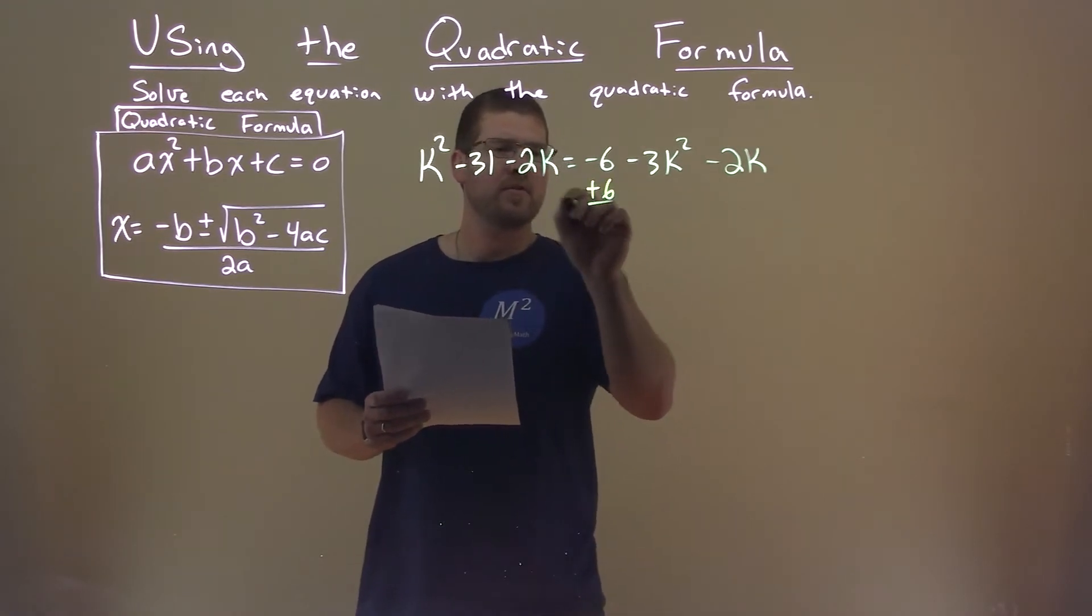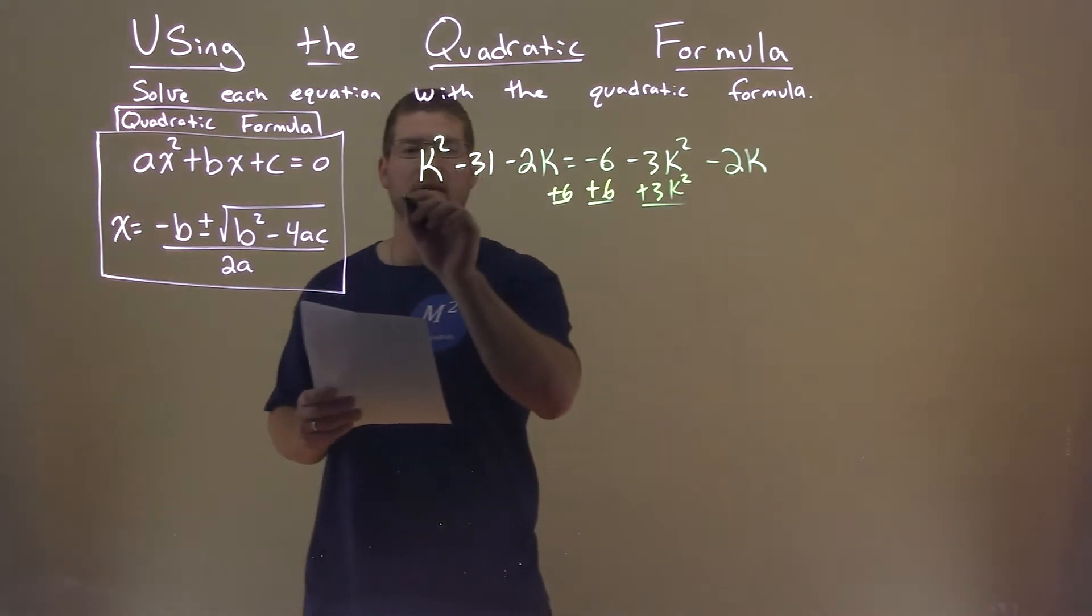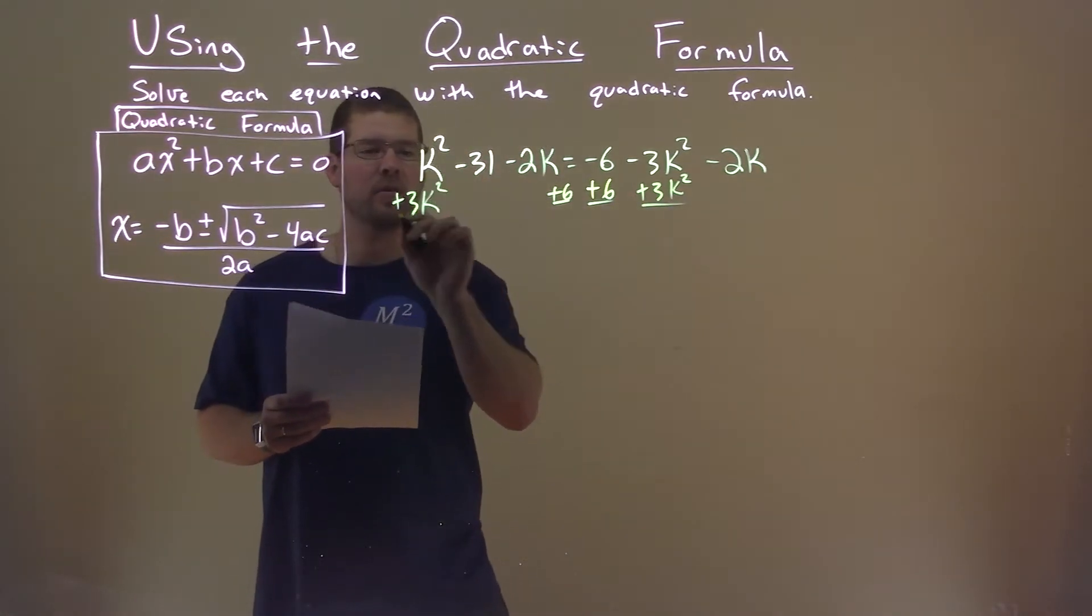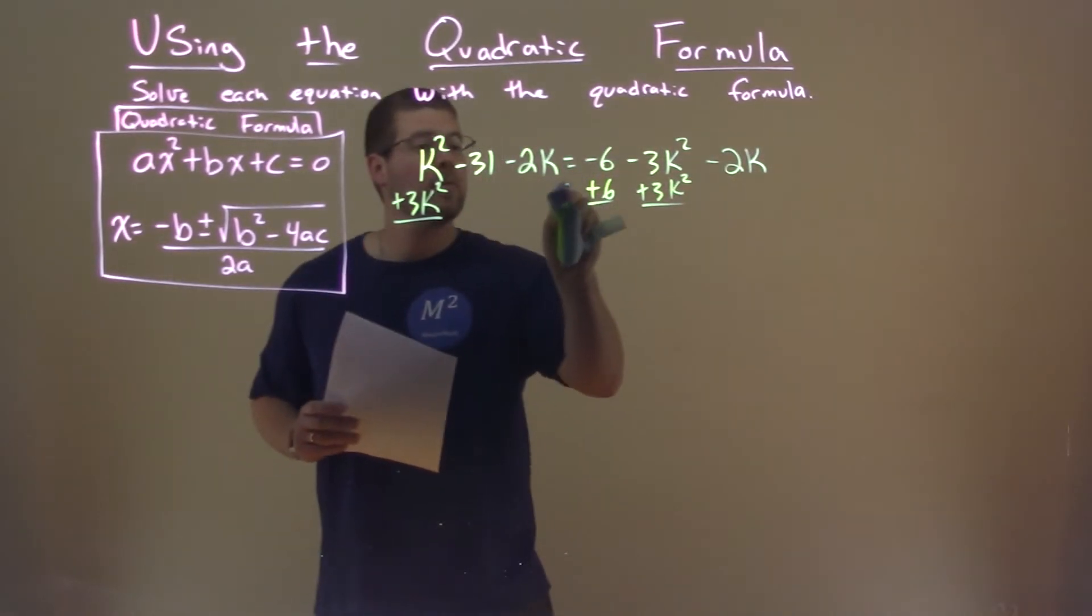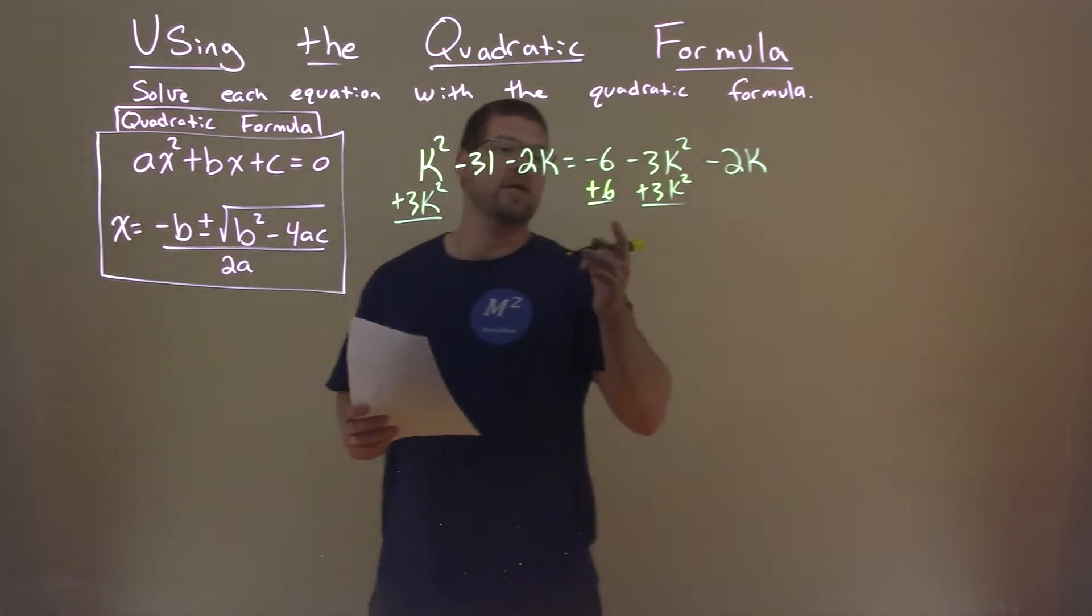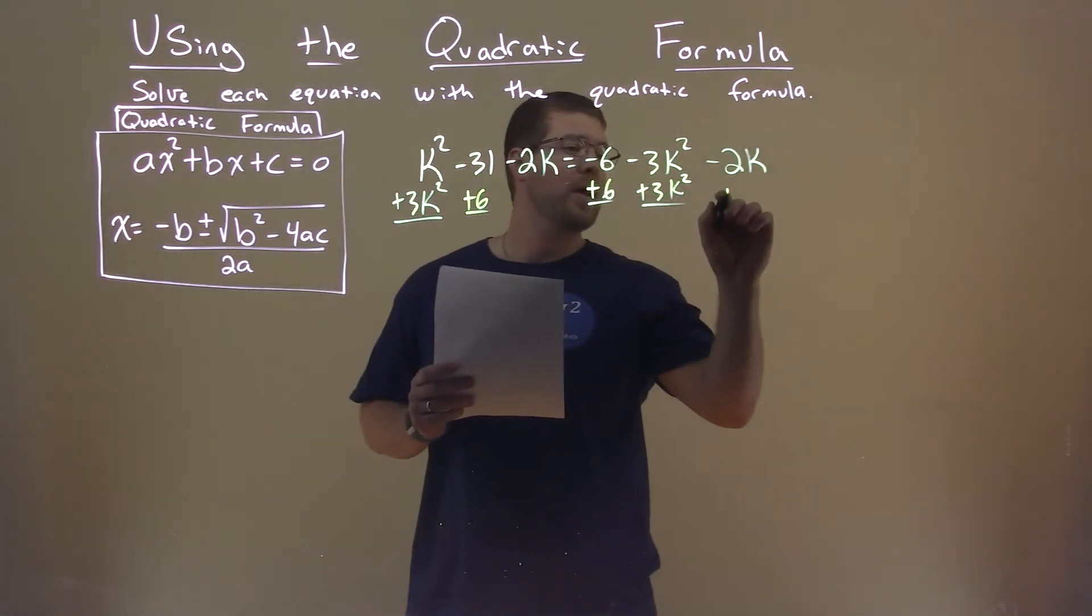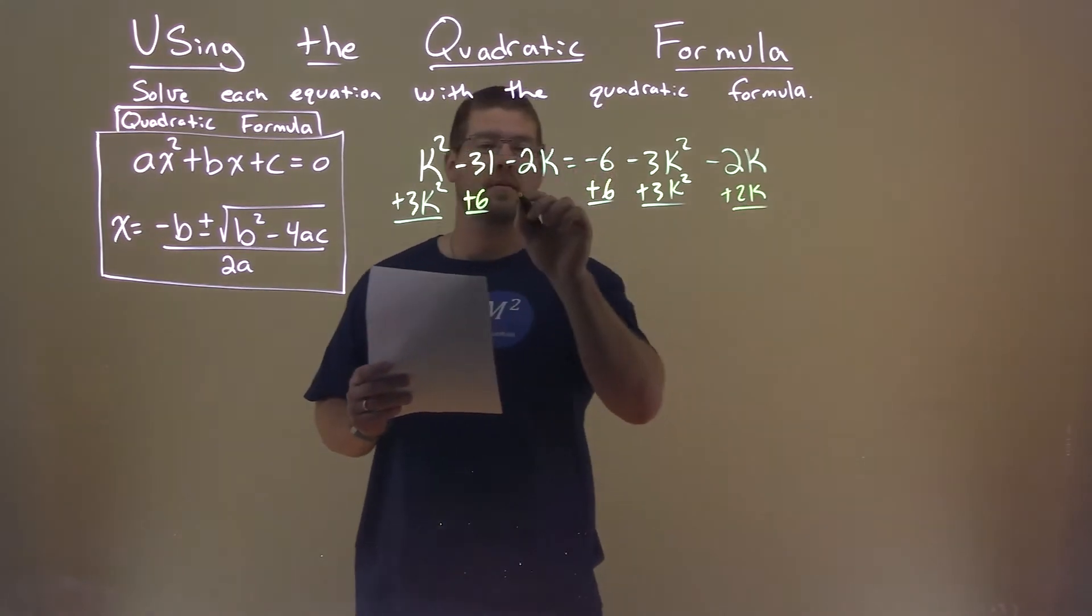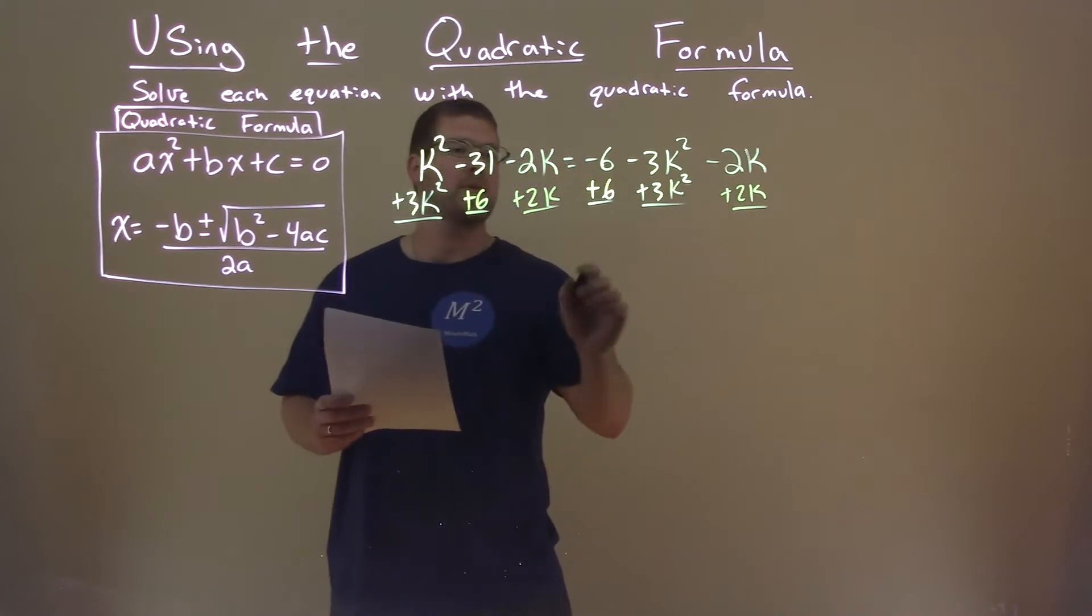So I'm going to add a 6 to both sides. I'm going to add a 3k squared to both sides. Make sure you add it to its like terms. Oh, the 6. Didn't see the 31. Oh, but I dropped my pen. How embarrassing. We add a 6 here, and then we add a 2k to both sides.